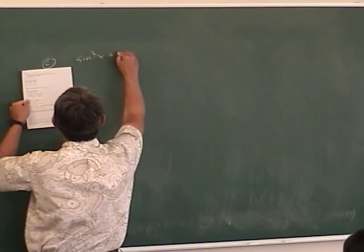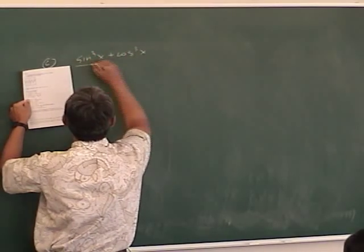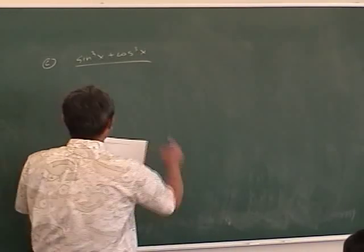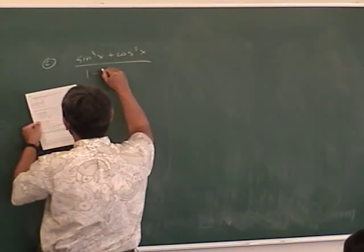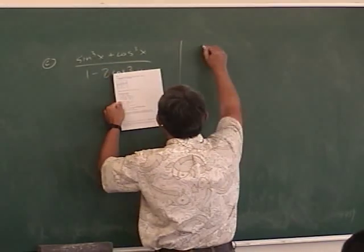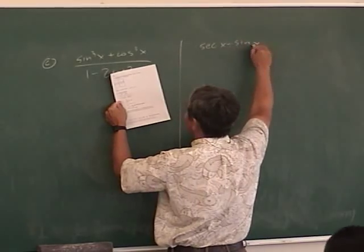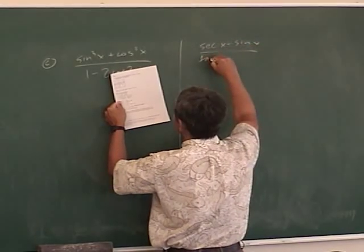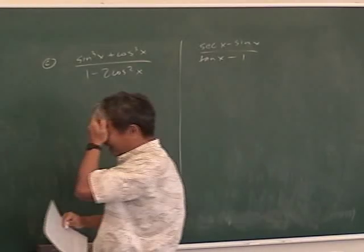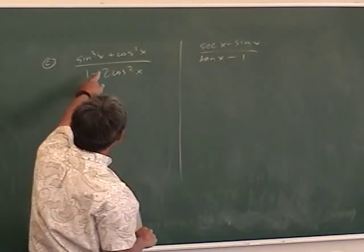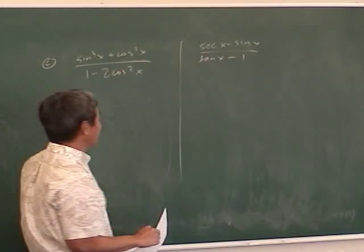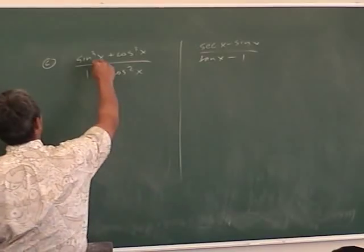Tonight's worksheet has: sine cubed x plus cosine cubed x over secant x minus sine x, all over tangent x minus 1. When you see sine cubed plus cosine cubed, what are you thinking? That's a sum of cubes. I'll write it on the board tomorrow. The strategy would be to factor the sum of cubes and then change everything to sines and cosines.